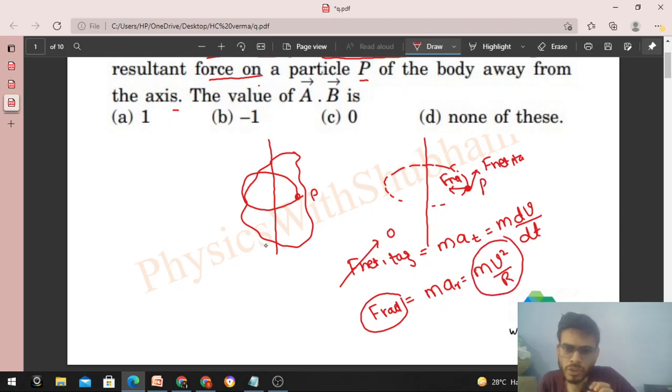So if the net force acting on the particle is in the radial direction, means vector B will be in radial direction and vector A will be along the axis. So what is the angle between vector A and vector B? That will be 90 degrees.